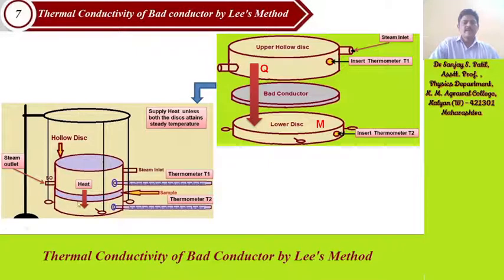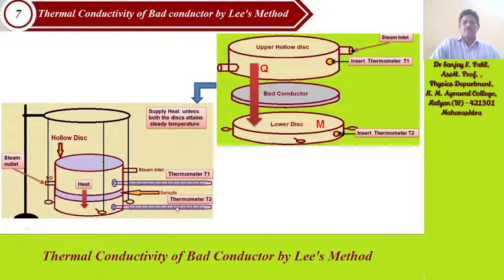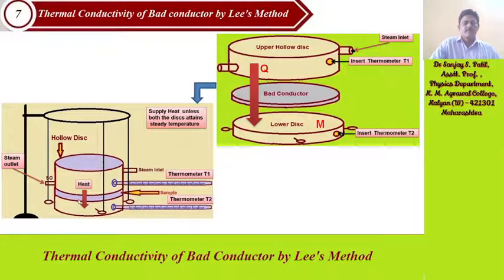All of this arrangement is shown in this figure. Continuously, from the upper hollow disk, heat is passing through this bare conductor to the lower disk. There is a temperature difference naturally — thermometer T1 shows a higher temperature than thermometer T2, due to the sample or bad conductor between the two disks.